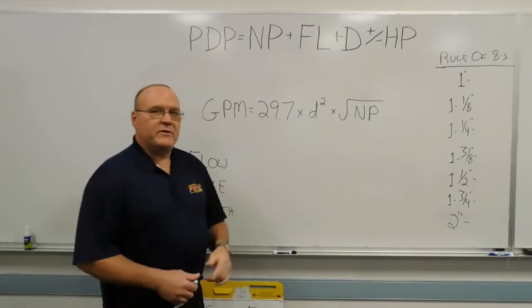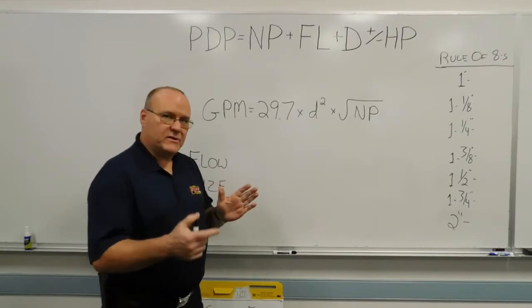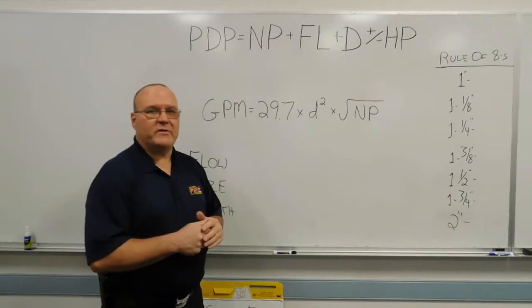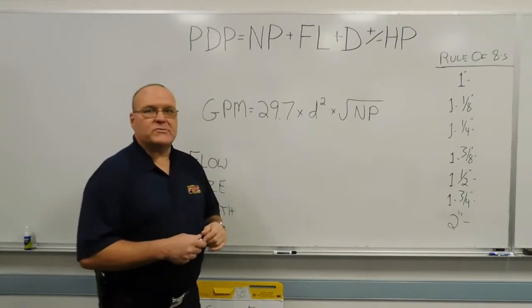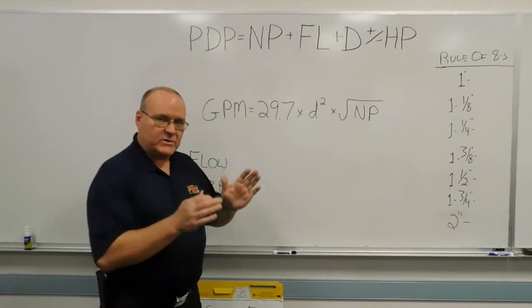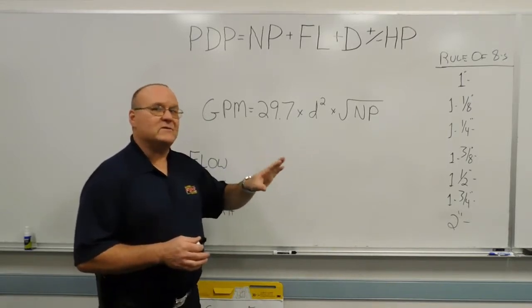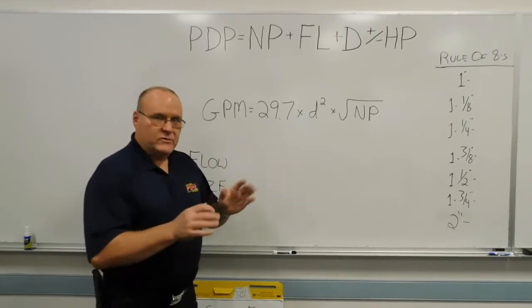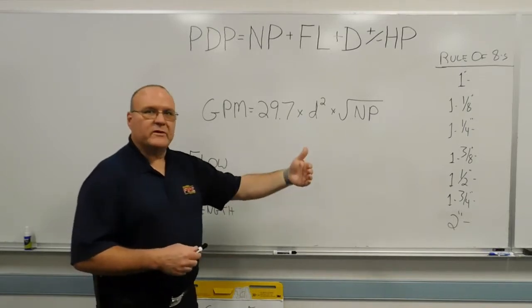Some departments have those and they've pre-planned their engines so they know that a given size hose line, given length of hose, they know what to expect in gallon per minute flow at a certain nozzle pressure. And their pump discharge pressure. So they set that up, they put it on a chart, they pre-plan it, they put it in the pump panel somewhere or in the engineer's compartment where it's easily accessible. So if your department uses pump charts, use those. Again, they're great to get you to what you're trying to flow.